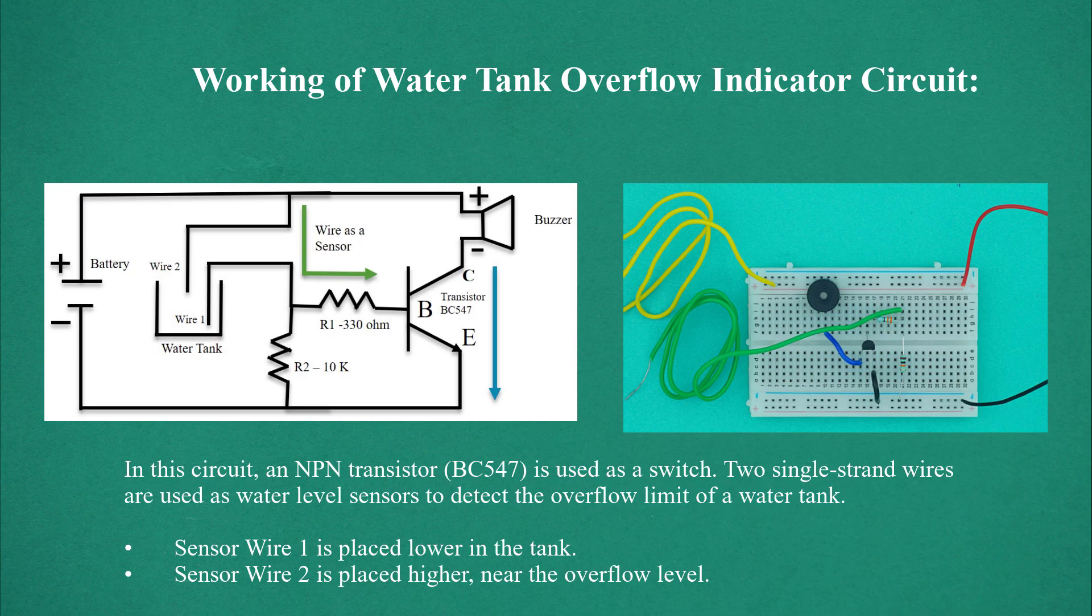In this circuit, an NPN transistor BC547 is used as a switch. Two single-strand wires are used as water level sensors to detect the overflow limit of a water tank.